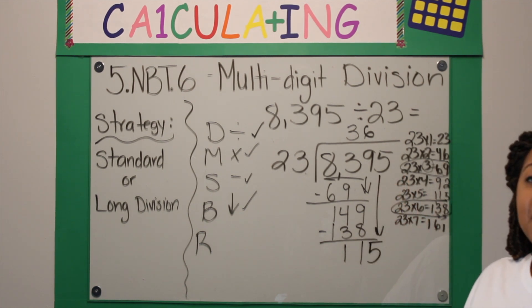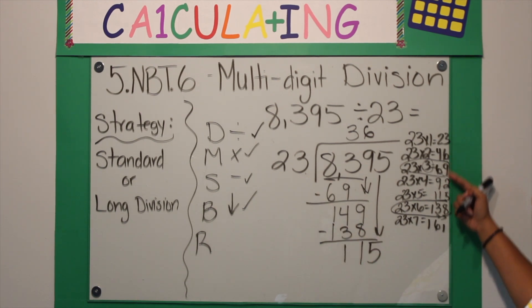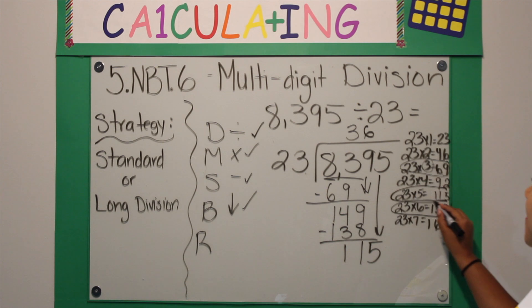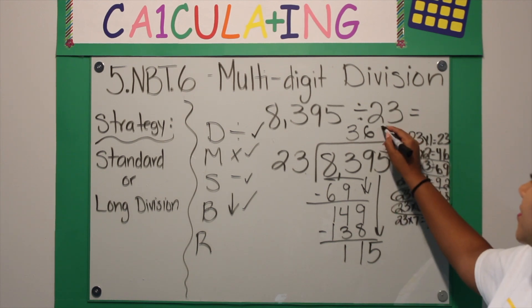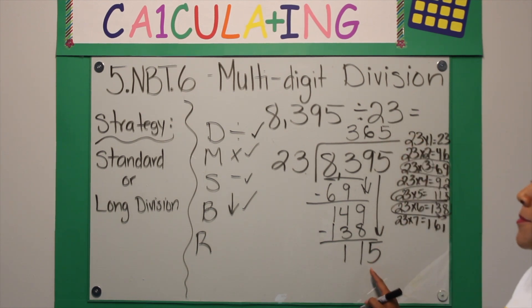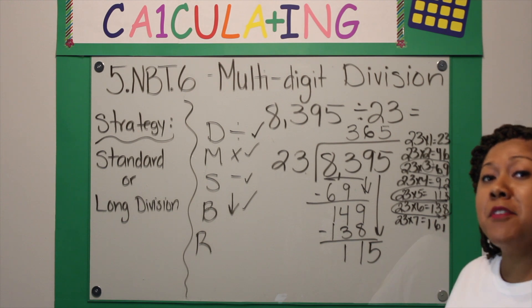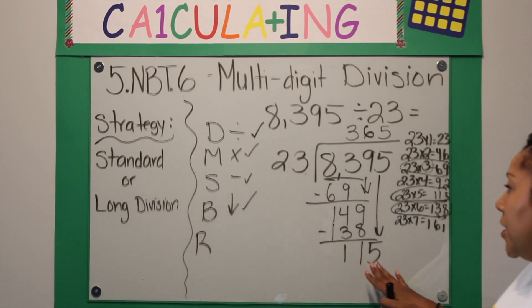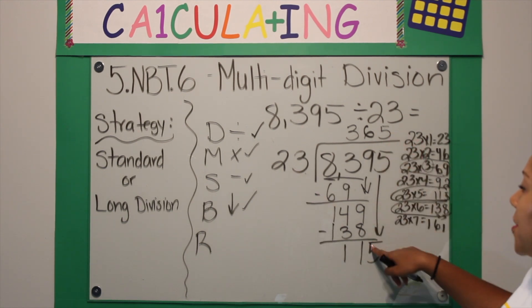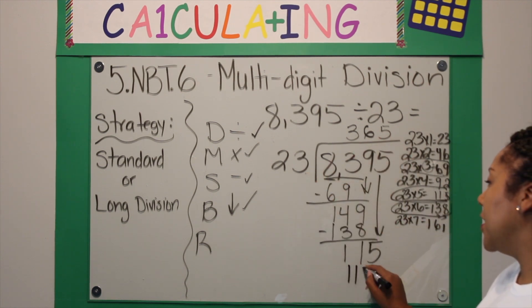And lastly I bring down my 5. So now we're going to start the process all over again. Last one: 23 goes into 115 - look on the side, it looks like 5, and it goes in evenly. So the object is to get this to 0 or as close to 0, because it has to be smaller than 23. So if you have a remainder it must be smaller. So don't stop here, you have to continue. So 5 times 23 is 115, and when I subtract I get 0.